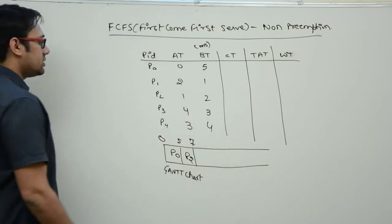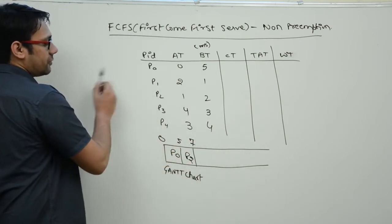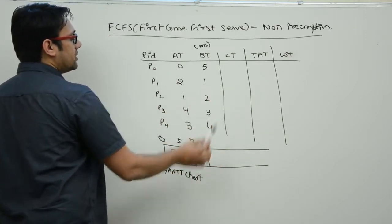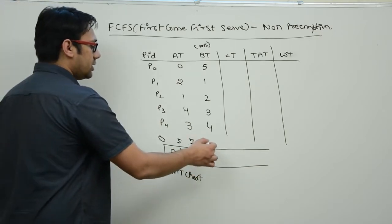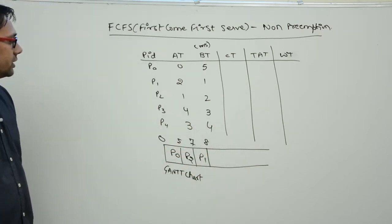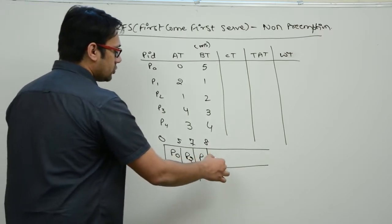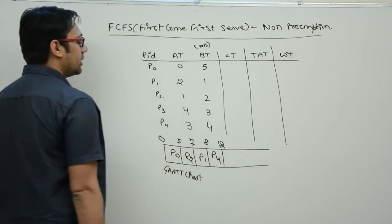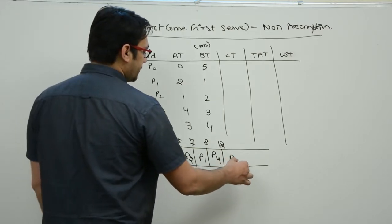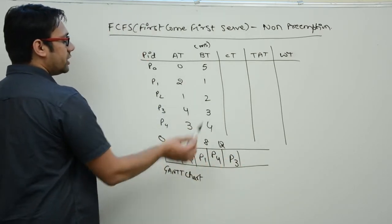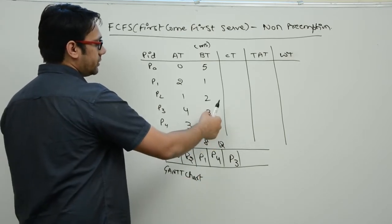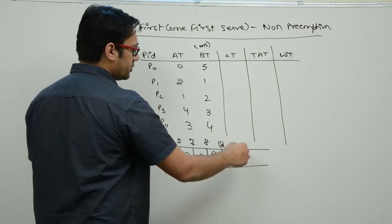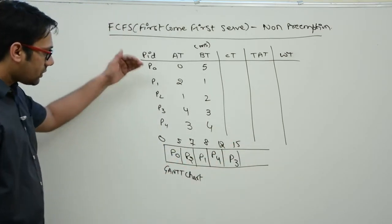P2 has a burst time of 2, so it finishes at time 7. Then P1 gets the CPU with a burst time of 1, finishing at time 8. Next, P4 is allocated the CPU for 4 units, finishing at time 12. Finally, P3 arrived at time 4 and has a burst time of 3, finishing at time 15.